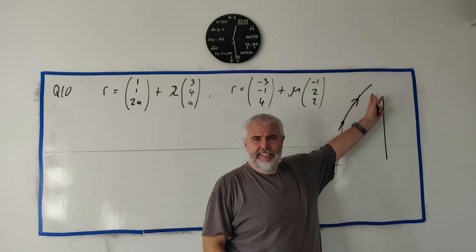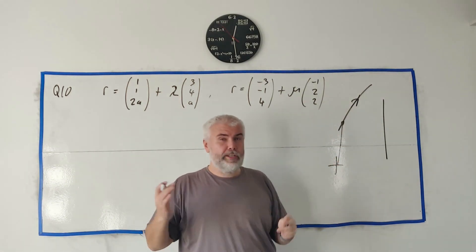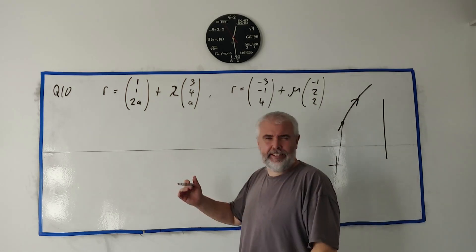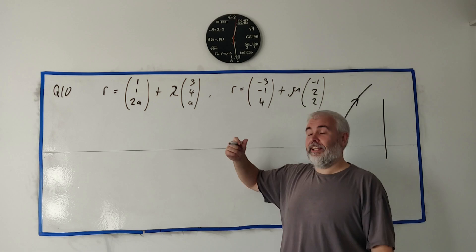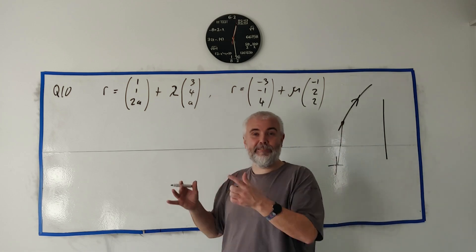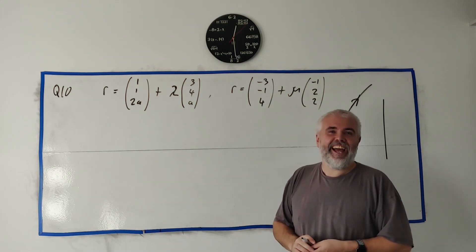Remember two lines are guaranteed to hit each other in two dimensions but not in three, so we don't know if these lines are going to hit each other. In fact, in part A they don't, but in part B they do.